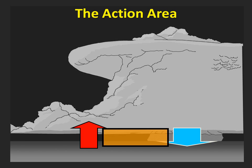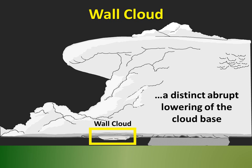This is what we call the action area, and it's where the updraft and downdraft come together. In most cases, this will be on the backside of a supercell storm. So if you're dealing with a storm moving from the southwest toward the northeast, the updraft will typically be on the southwest edge of the storm.